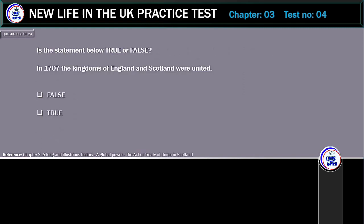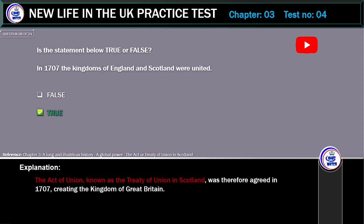Is the statement below true or false? In 1707 the kingdoms of England and Scotland were united. The correct answer is True. The Act of Union, known as the Treaty of Union in Scotland, was agreed in 1707, creating the Kingdom of Great Britain.